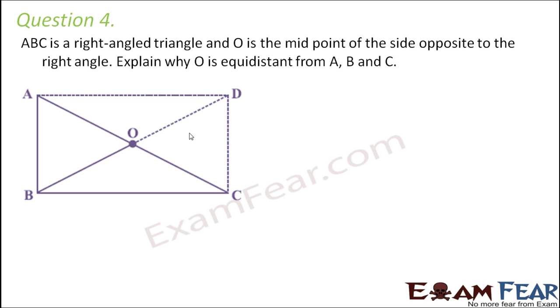Question number four: ABC is a right-angle triangle and O is the midpoint of the side opposite to the right angle. So right angle is this angle, angle B. So AC is the side opposite to the right angle.